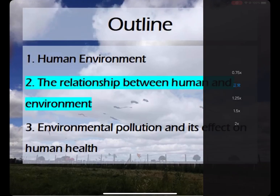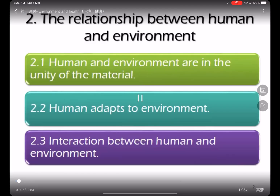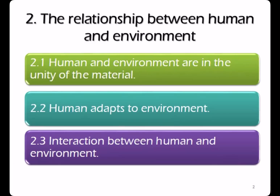Next, we are going to talk about the relationship between human and environment. The relationship between human and environment contains three parts. First, human and environment are in the unity of the material. Second, human adapts to environment. And we are also going to talk about interaction between human and environment.